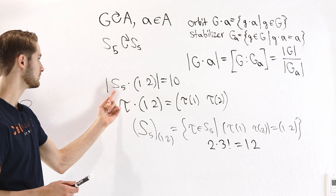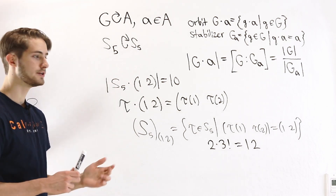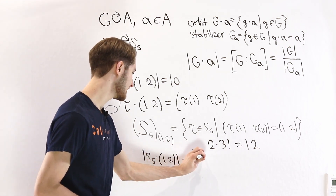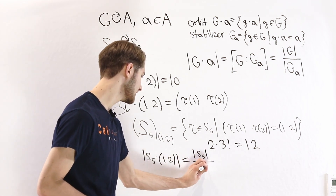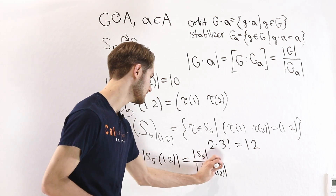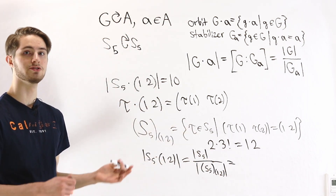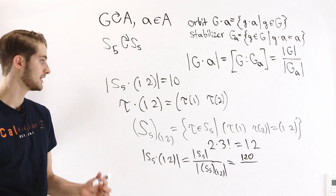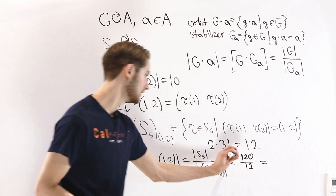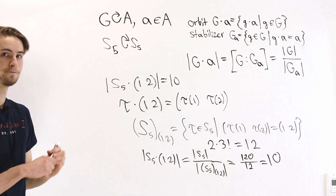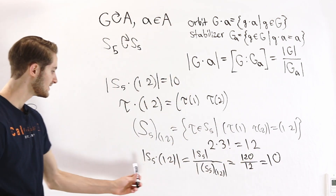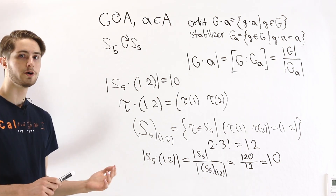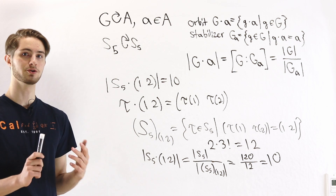By the Orbit Stabilizer Theorem, the size of the orbit S5 times (1 2) equals the size of S5 divided by the size of the stabilizer S5 sub (1 2). The size of S5 is 5 factorial, which is 120, and the stabilizer has size 2 times 3 factorial, which is 12. So 120 divided by 12 gives us 10 — exactly the same result we got directly. That's how we use the Orbit Stabilizer Theorem to find information about group actions.